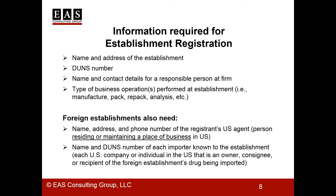For foreign establishments, there are additional requirements. You need to include the name, address, and phone number of a U.S. agent — a person residing or maintaining a place of business in the United States that the foreign establishment designates as its agent. You also need the name and DUNS number of each importer, that is, each U.S. company or individual that's an owner, consignee, or recipient of the foreign establishment's drug that's coming into the country.